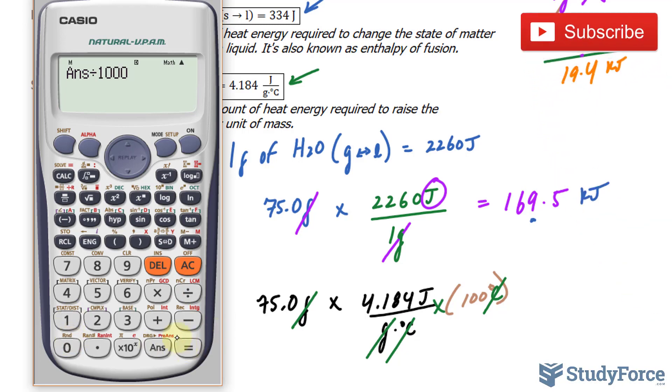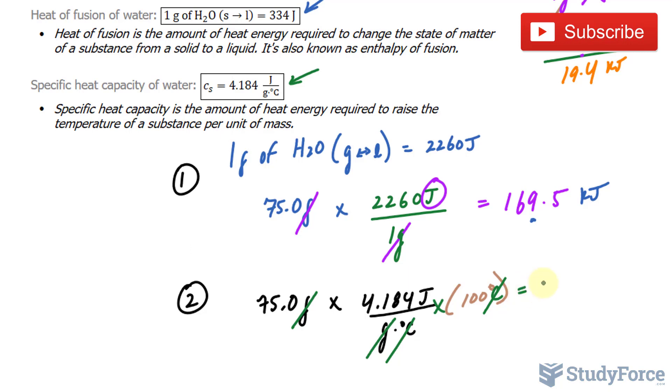We'll divide this by 1,000 to get kilojoules, and that's 31.38 kilojoules of energy. We need this to three significant figures, so I'll just place a dot for now.